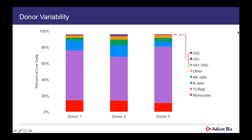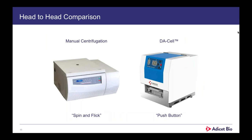Prior to implementation of the DA cell, we looked at donor variability of the material. Three different donors show high variability in many starting populations. Most starting material is high in monocytes and TCR alpha-betas. The gamma-delta population within all live cells is relatively small — less than 2% of all incoming material — and we need clean resolution on this population to ensure we're manufacturing the right cells for treatment of patients. This is the crux of the rest of the presentation: how do we compare a manual centrifugation method to this new DA cell?